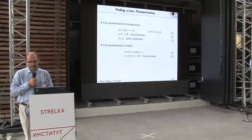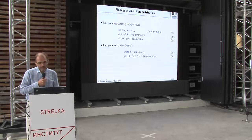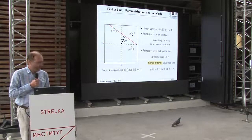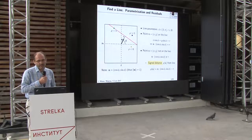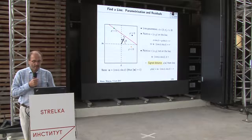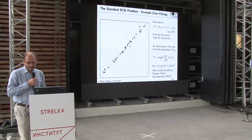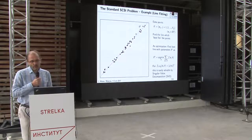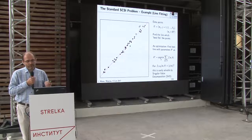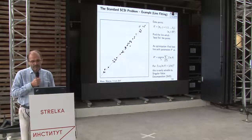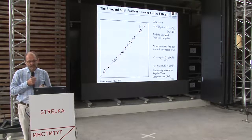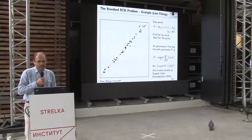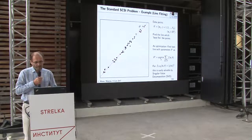After fixing the parameterization, we define a residual. For line fitting, the standard residual is the distance to the line. We have the search space, the cost function, and we can obtain the optimal parameter theta-star — the minimum over all possible parameters of an additive cost function summing individual residuals. This can be solved by what we now call singular value decomposition, easily in closed form.